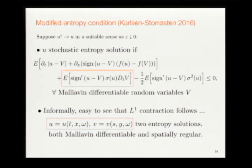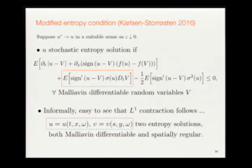Taking epsilon to zero and assuming convergence to u, we formally obtain the entropy inequality with the Malliavin derivative term. We suggest this as the solution concept: the entropy inequalities should hold for all Malliavin-differentiable random variables v.